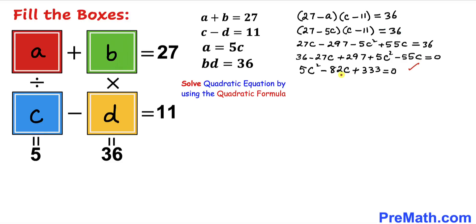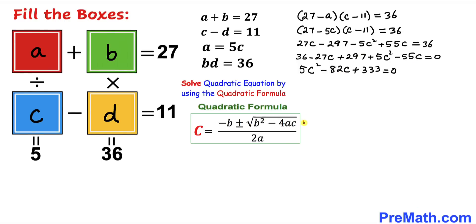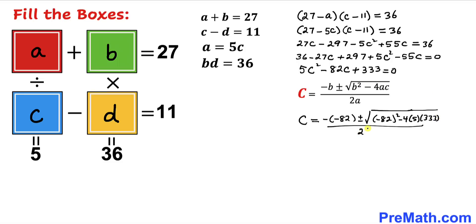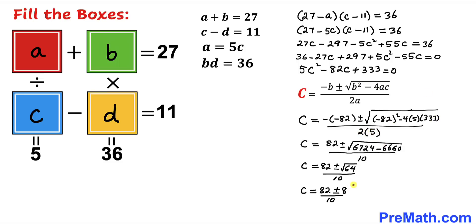We'll solve this using the quadratic formula. Filling in the values — where the quadratic coefficient a is 5, b is negative 82, and c (the constant) is 333 — we get C equals (82 plus or minus the square root of (82² minus 4 times 5 times 333)) all over 2 times 5.